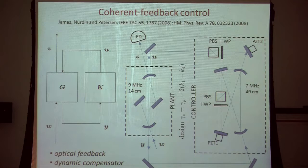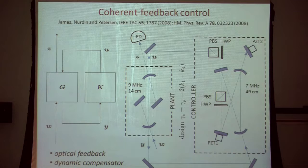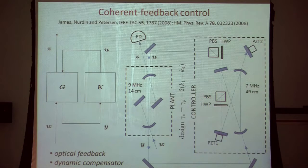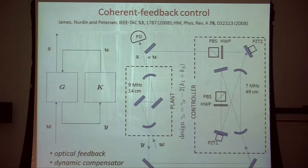Here's a toy experiment motivated by a seminal paper by Matthew James, Henry Nürdin, and Ian Petersen on what I'll call coherent feedback control. This is feedback control where both the plant and controller are quantum physical systems, and the signals traveling around the loop take an optical form rather than electrical form. In fact, we treat the plant, the propagating signals, and the controller all using a quantum mechanical formalism.